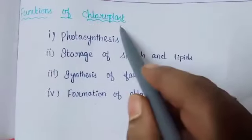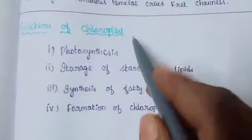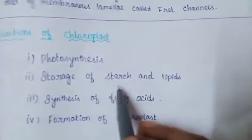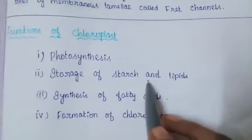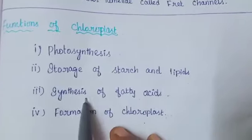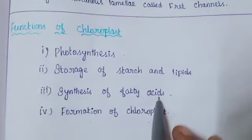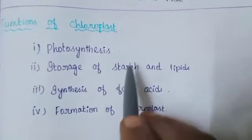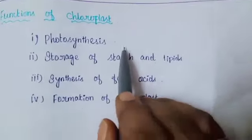The functions of chloroplast are: photosynthesis, storage of starch and lipids, synthesis of fatty acids, and formation of chloroplast components. These are the main functions of chloroplast.